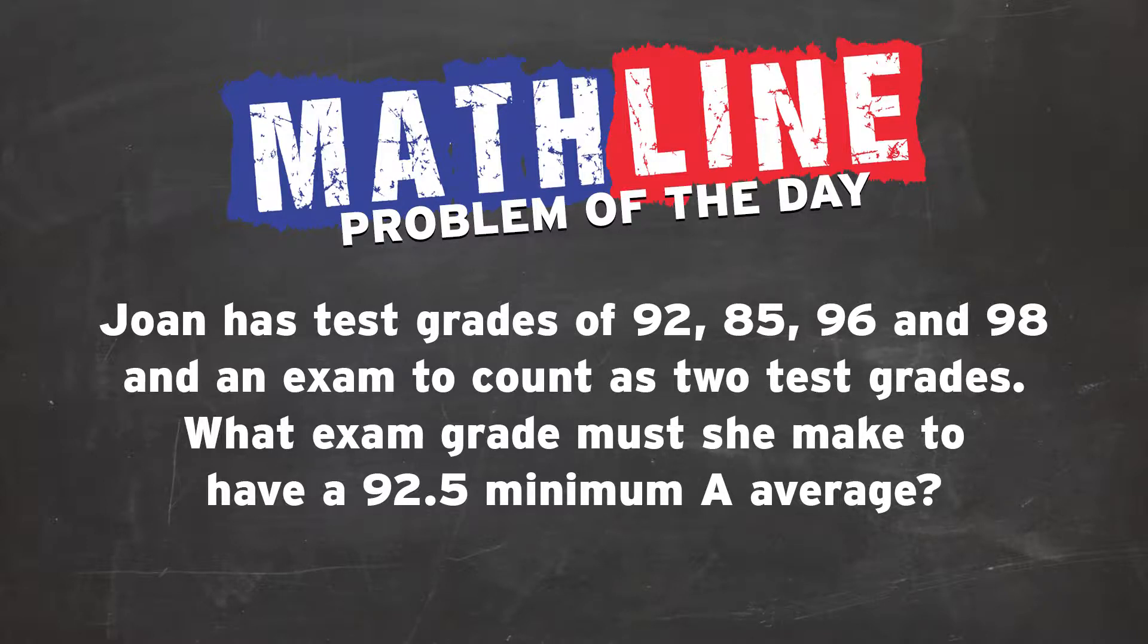This story is about Joan, who has test grades of 92, 85, 96, and 98. And she's going to take an exam that's going to count like two of those test grades. So what exam grade must she do to maintain a minimum 92.5, which is a minimum A average?